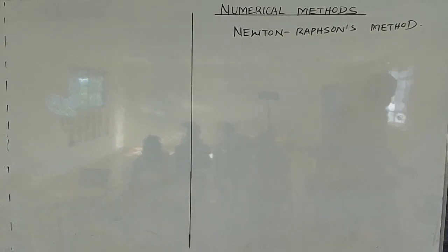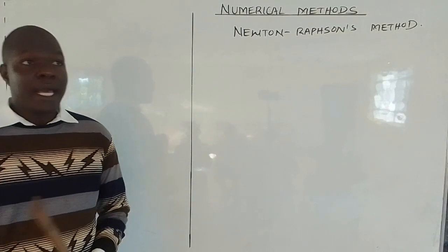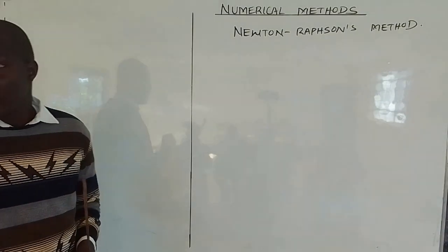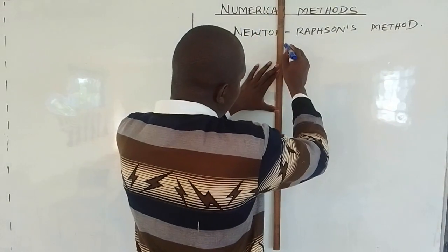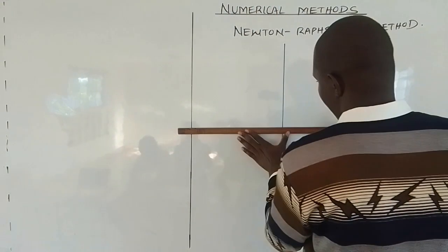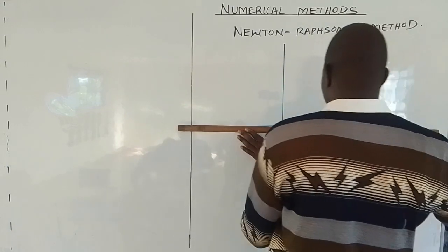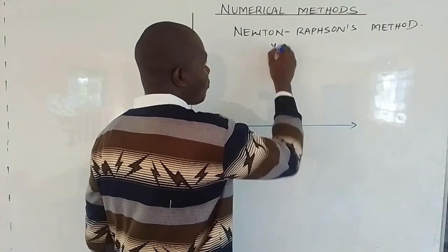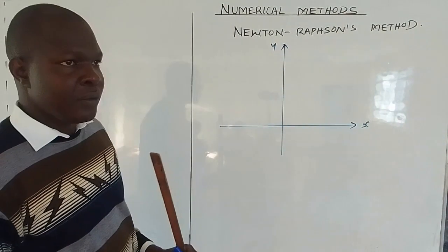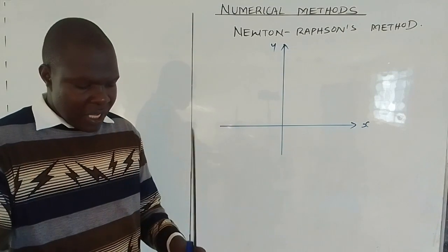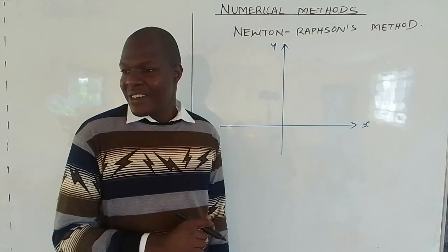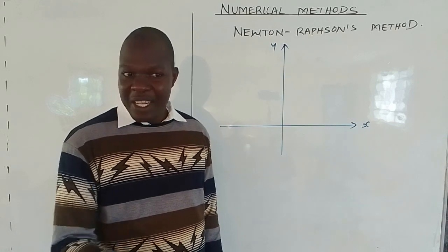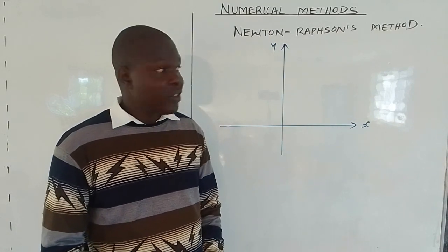The first method we want to see in numerical methods is the Newton-Raphson method. I want to use a simple case of a curve to derive the Newton-Raphson formula. That's a very simple approach based on the definition of the derivative. I will make a curve that touches the x-axis to make it simple, meaning at the point where it touches the x-axis, the y value is zero. This will help us get the formula in the simplest form.